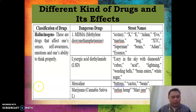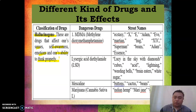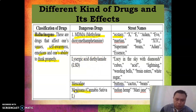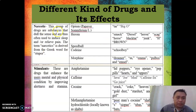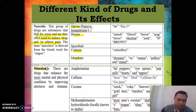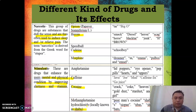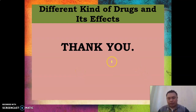Different kinds of drugs and their effects: Hallucinogens are drugs that affect one's senses, self-awareness, emotion, and ability to think properly. Common examples include MDMA (ecstasy), LSD (lysergic acid diethylamide), mescaline, and marijuana. Narcotics are drugs that dull the senses and induce sleep and relieve pain; examples include opium, heroin, codeine, and morphine. Stimulants enhance users' mental and physical condition by improving alertness and stamina; common examples are caffeine, cocaine, and shabu. That concludes the discussion — good luck on your exam.